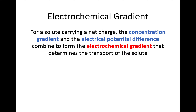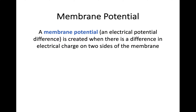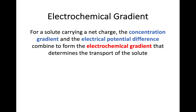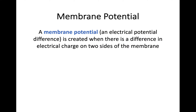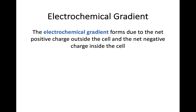What you'll not have heard of before is the electrical potential difference. This is also called the membrane potential, and it's created when there's a difference in electrical charge on the two sides of the membrane — the outside and the inside. If they have a different electrical charge, that creates the membrane potential, and both factors combine to form the electrochemical gradient which transports the solute.